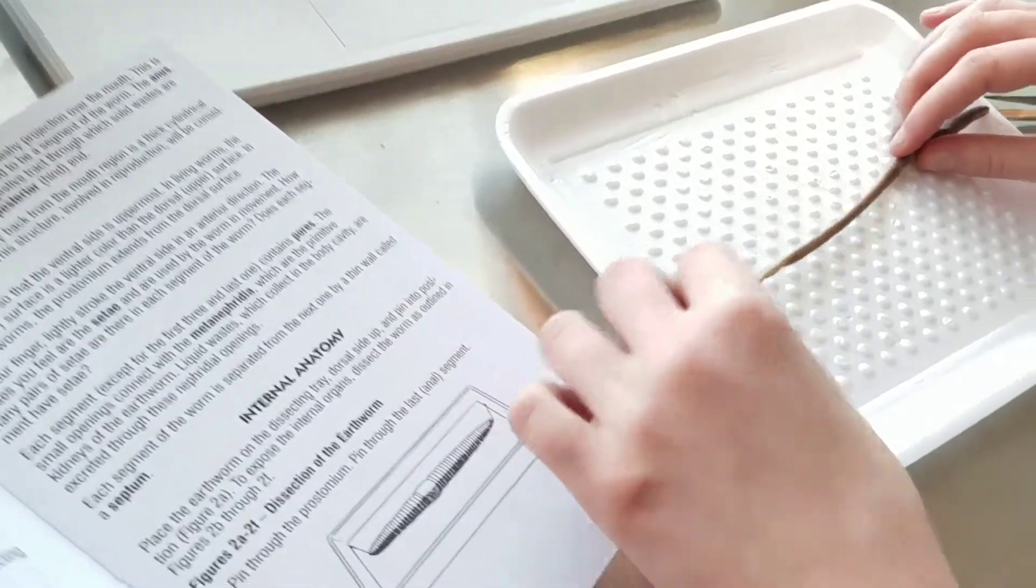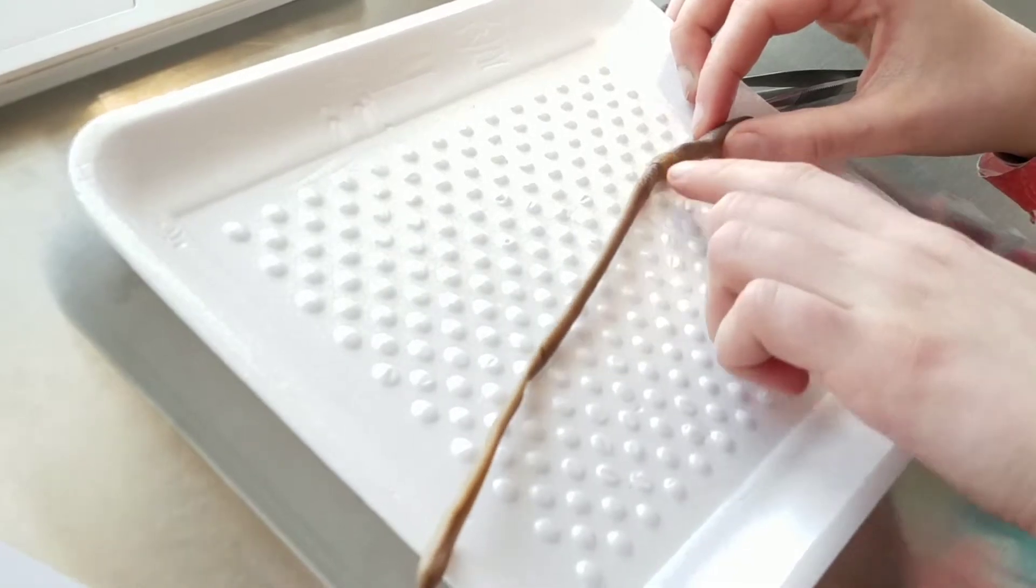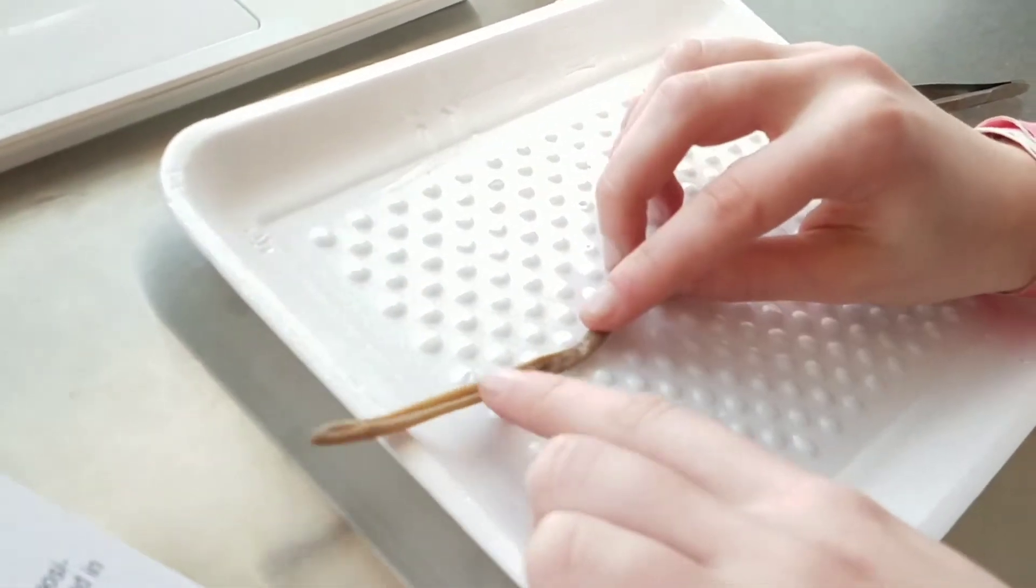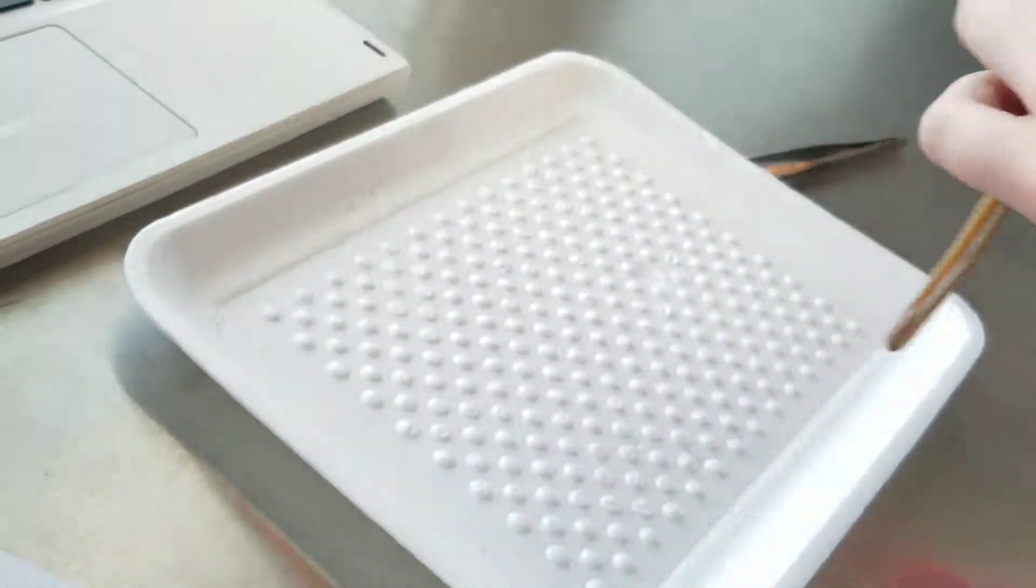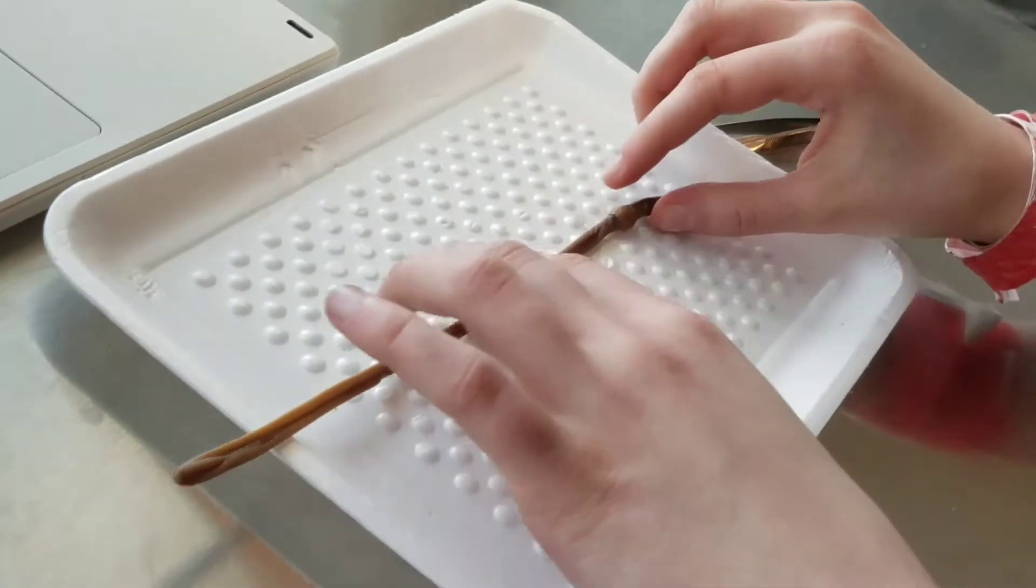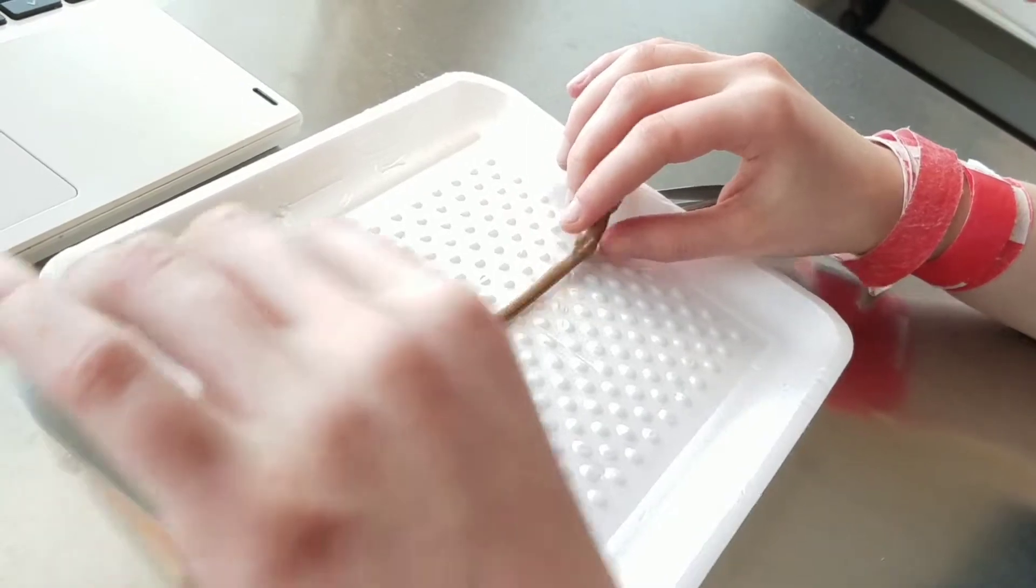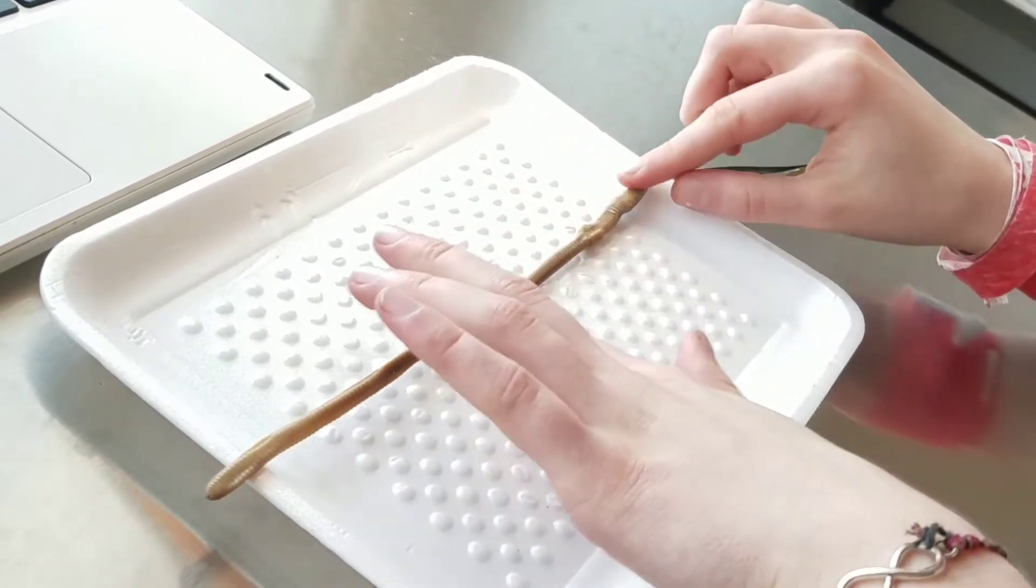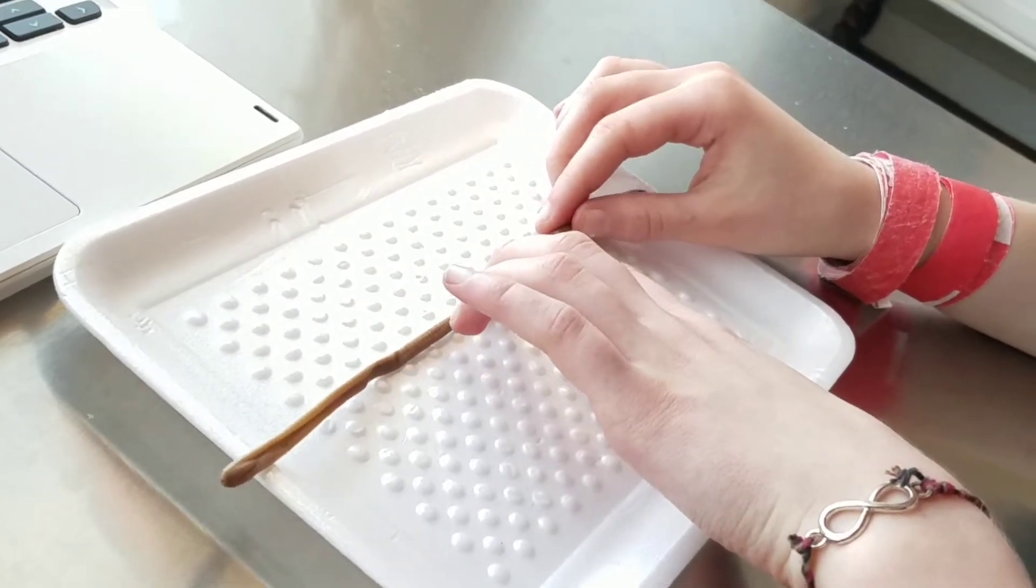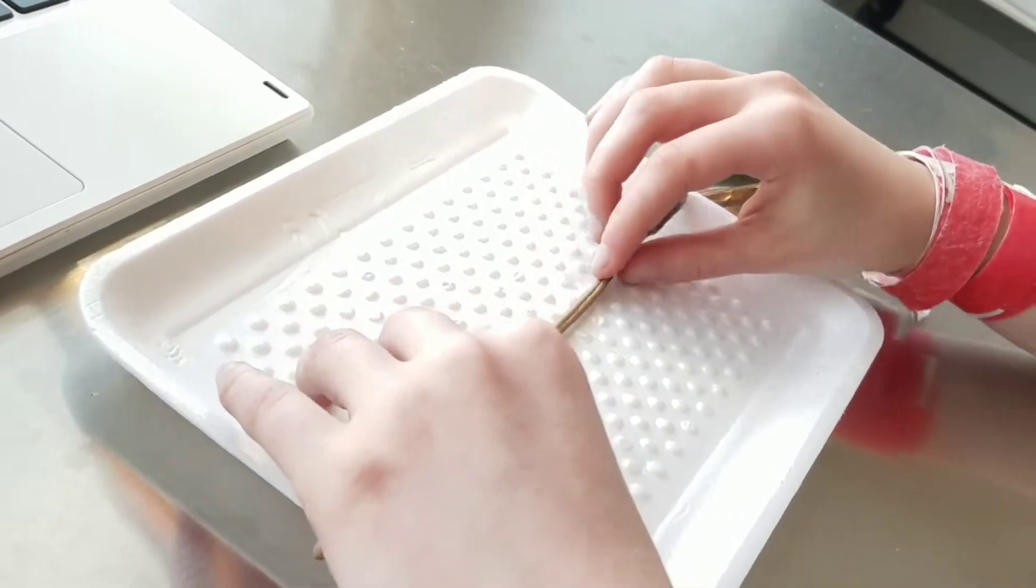Also, there's this darker line, and that is the dorsal vessel. That's its main blood vessel. It's kind of purpley. When you dissect it, you're not supposed to cut that. You're supposed to dissect this way, the paler part, and not the darker part, because right underneath that is its intestine. So you won't be able to see it if you dissect it there.